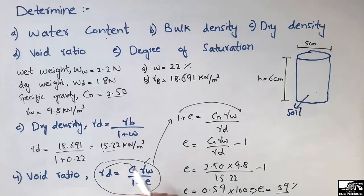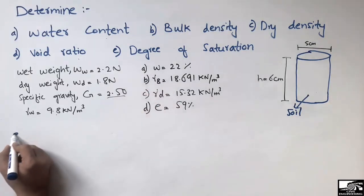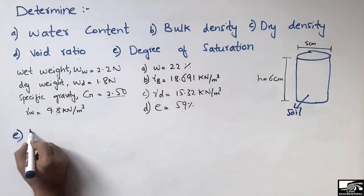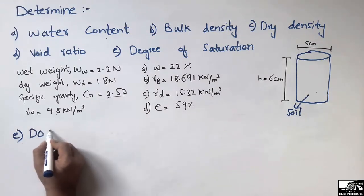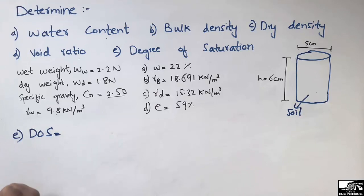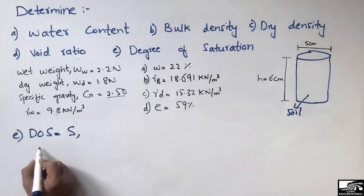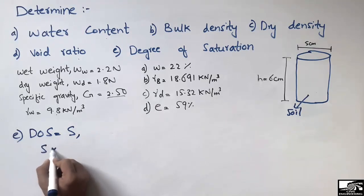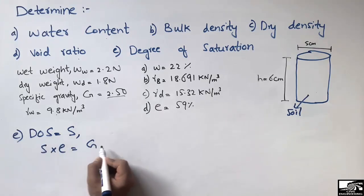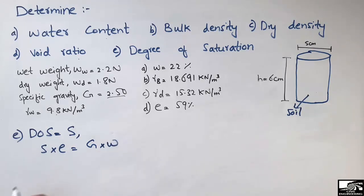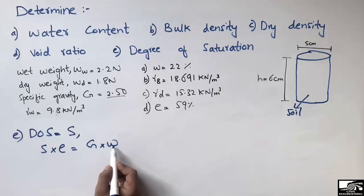The last parameter is the degree of saturation, represented by S. The degree of saturation is found using the formula: S times e equals G times w, where S is the degree of saturation, e is the void ratio, G is the specific gravity, and w is the water content.